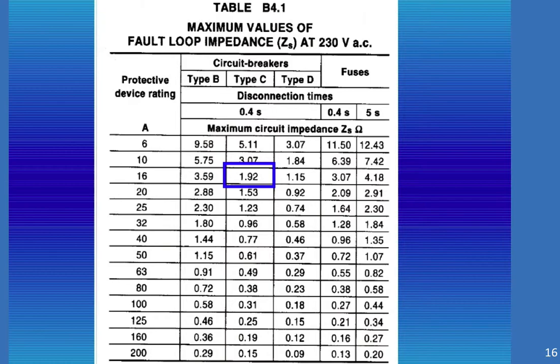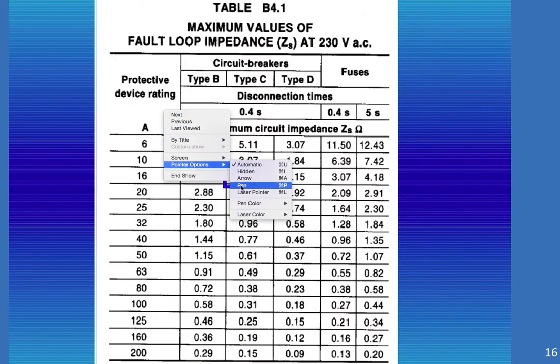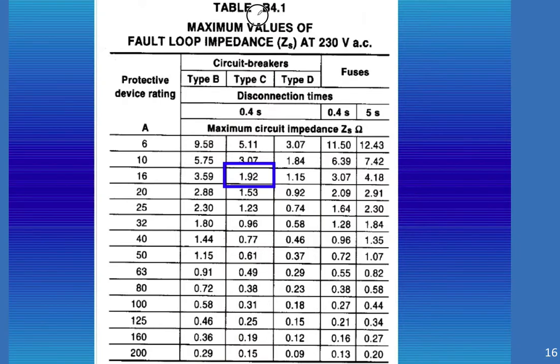So this is table B4.1. We're working with a C-type circuit breaker because they didn't tell us otherwise. We knew it was 16 amps. So this is the column that we're interested in. And it's a C-type where the two cross. This is the value we're interested in. And we know that if our circuit impedance is less than 1.92 ohms, then we're going to disconnect in 0.4 of a second, which is acceptable.